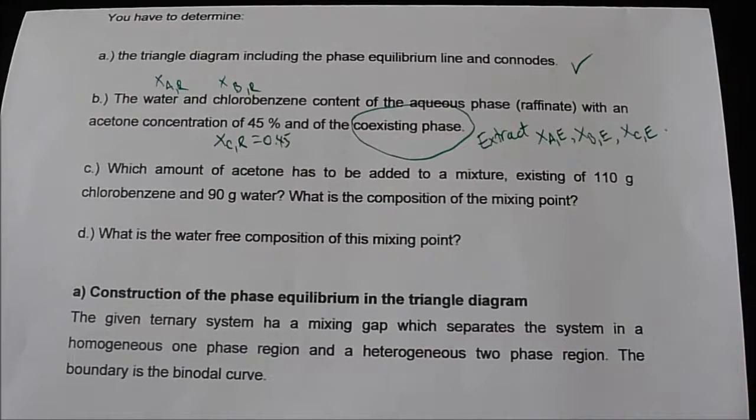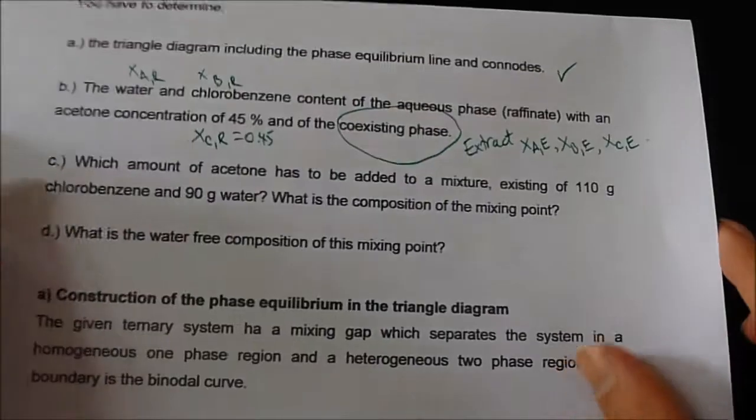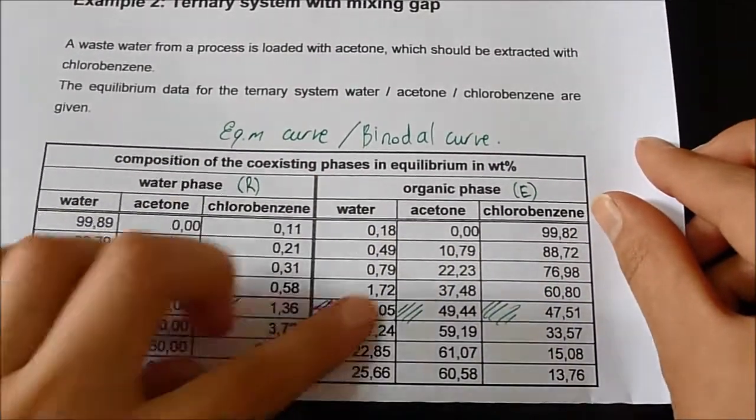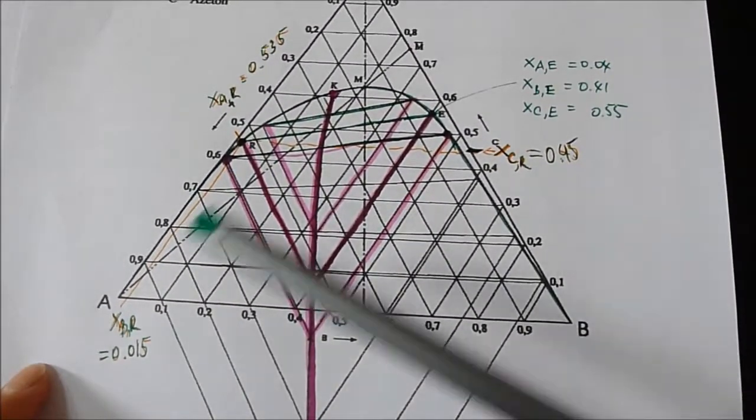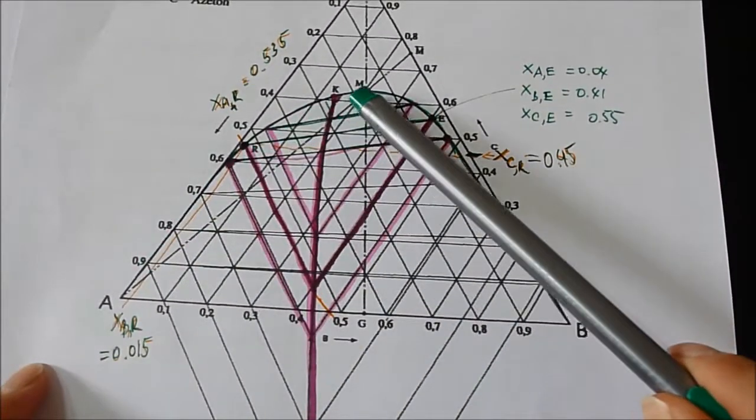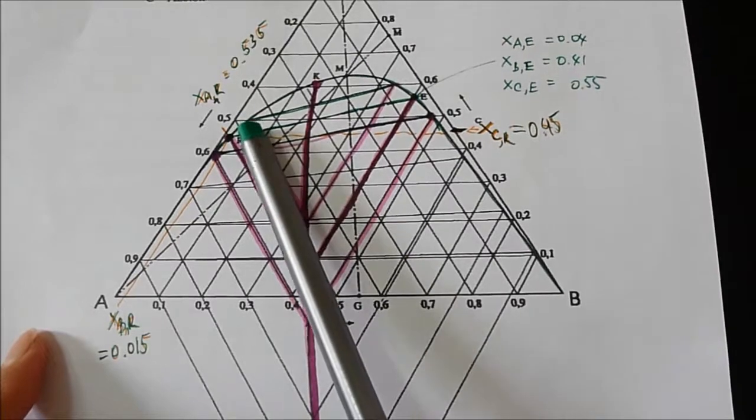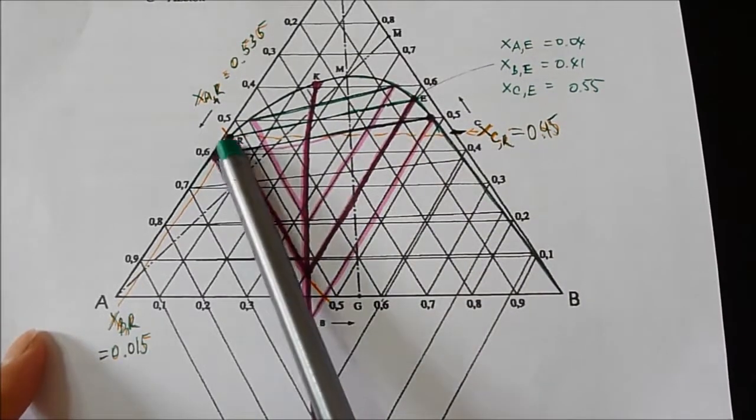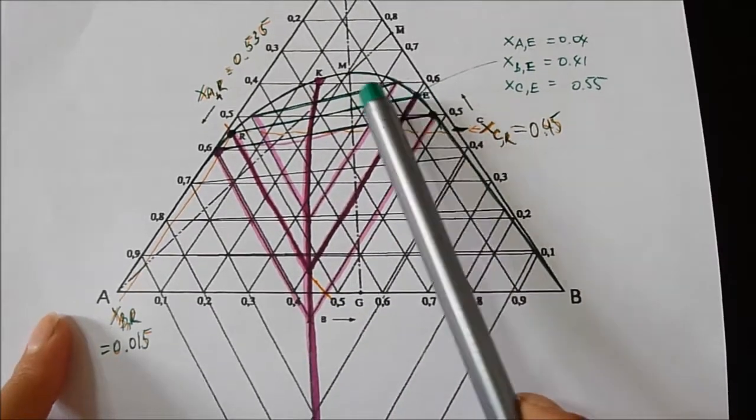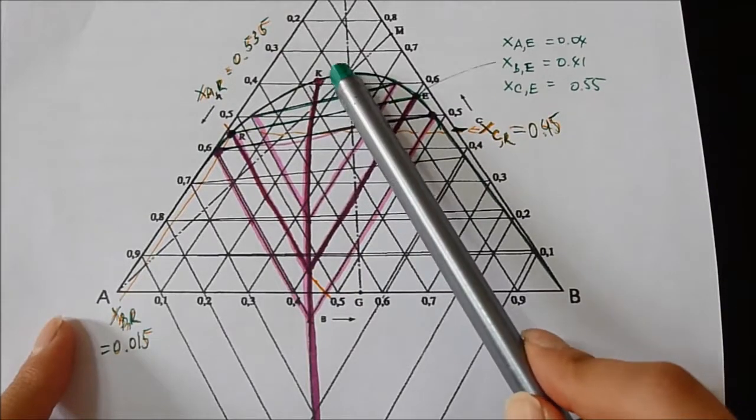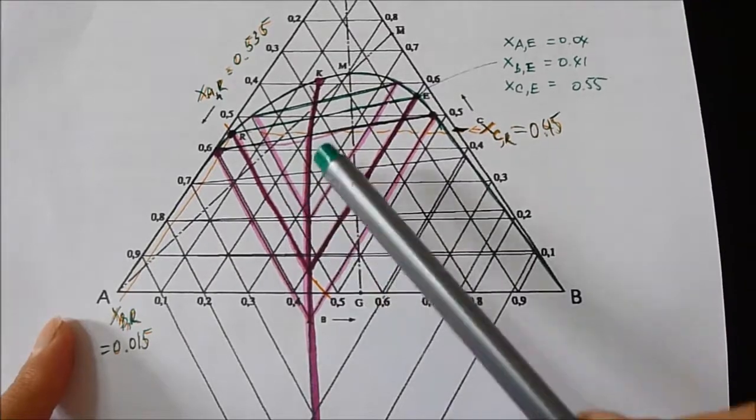First of all, we need to determine the triangle diagram, including the phase equilibrium line and conodes. Using this diagram, I drew on the ternary diagram, and it resulted in something like this. We drew the equilibrium binodal curve, and then from the points, we drew R and E's, and drew the conodes that connect the R and E's, and then after that, we point out the K, and from the point K, we use the conode points to find this curve.